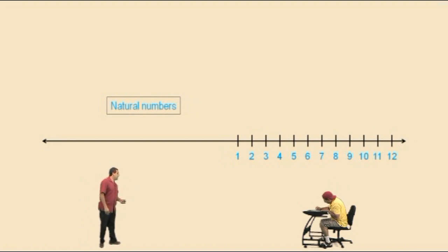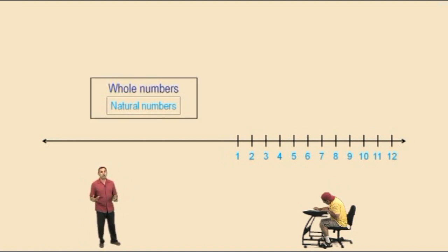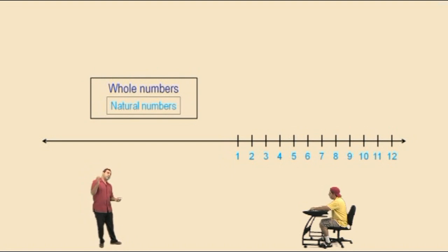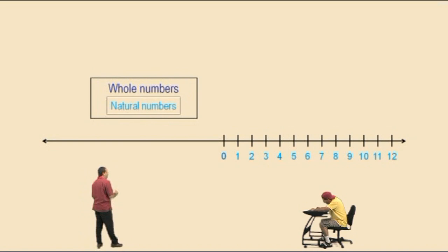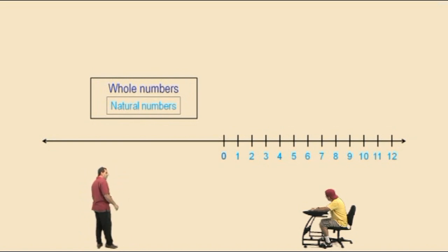The next set of numbers we're going to talk about are the whole numbers. The whole numbers just brings in the zero, right? The zero makes it whole. So whole numbers bring in the zero on our number line. And within the set of whole numbers are, obviously, the natural numbers.